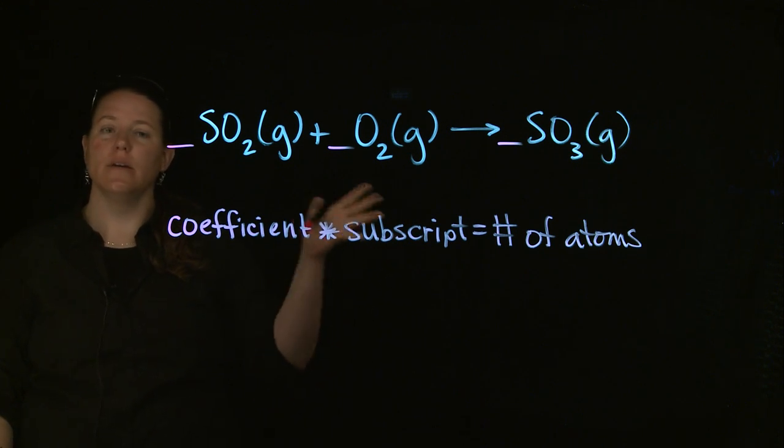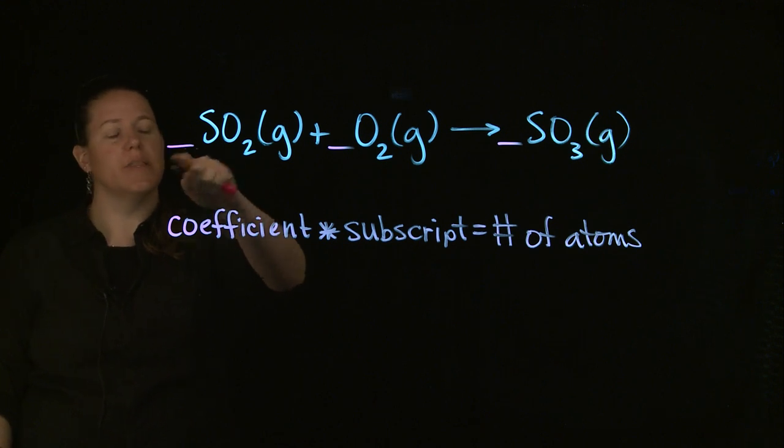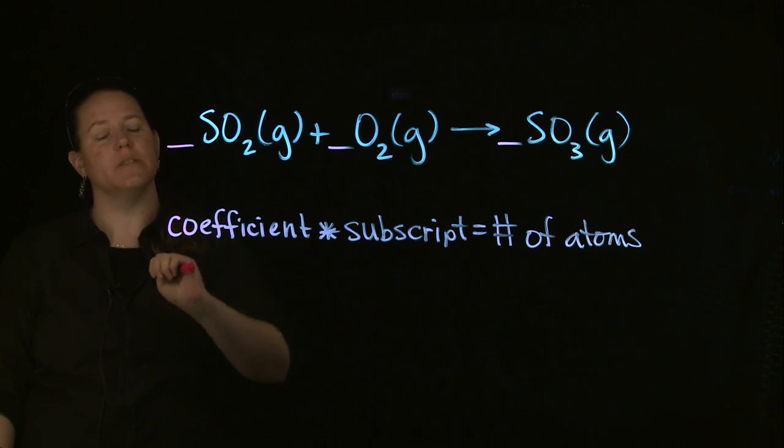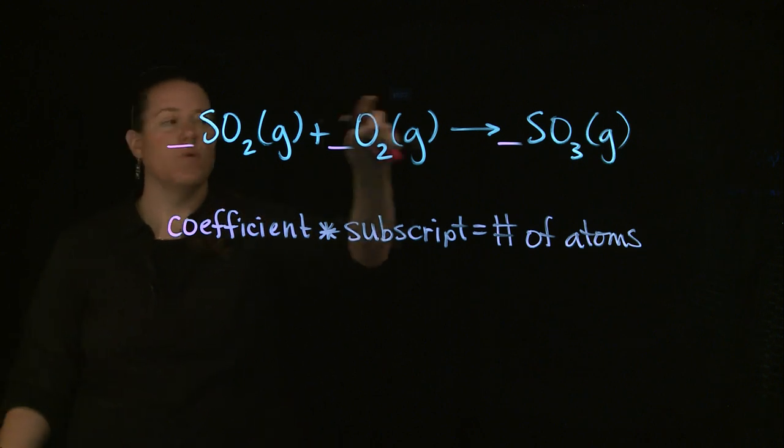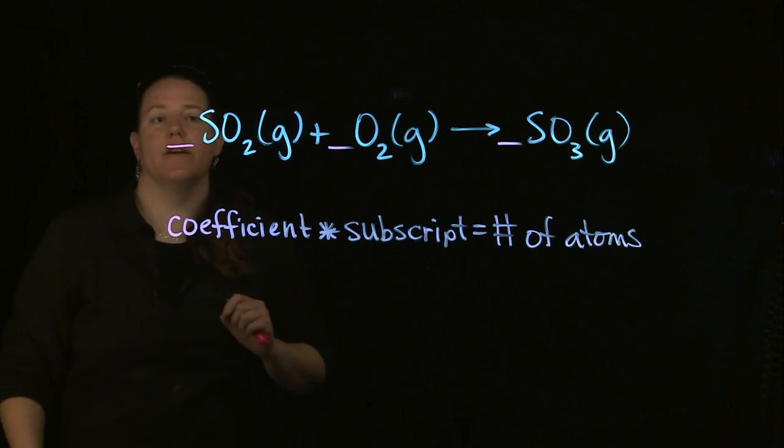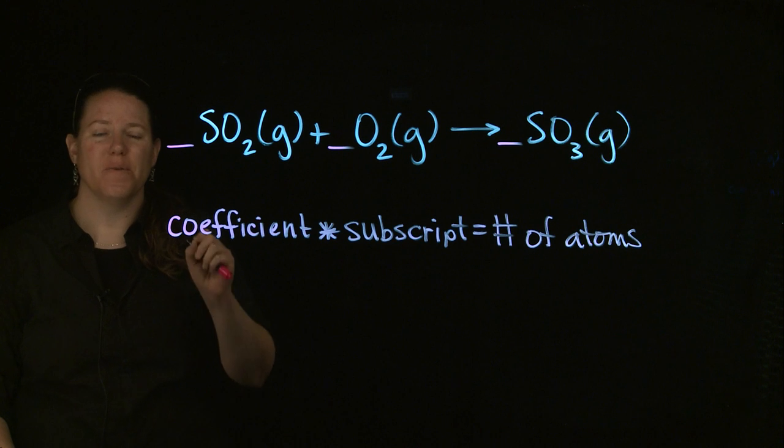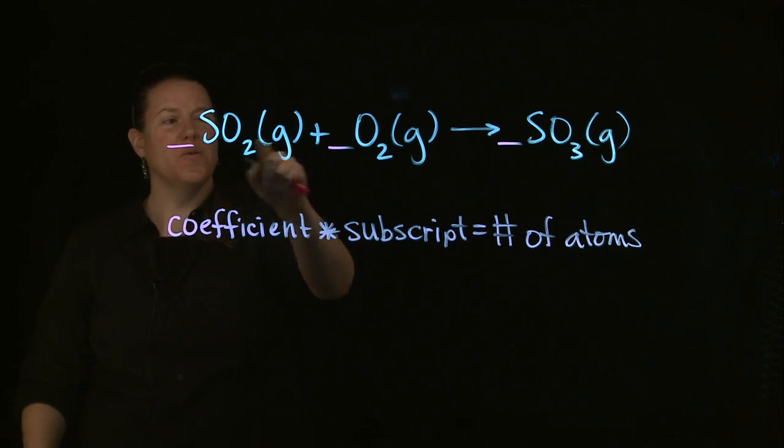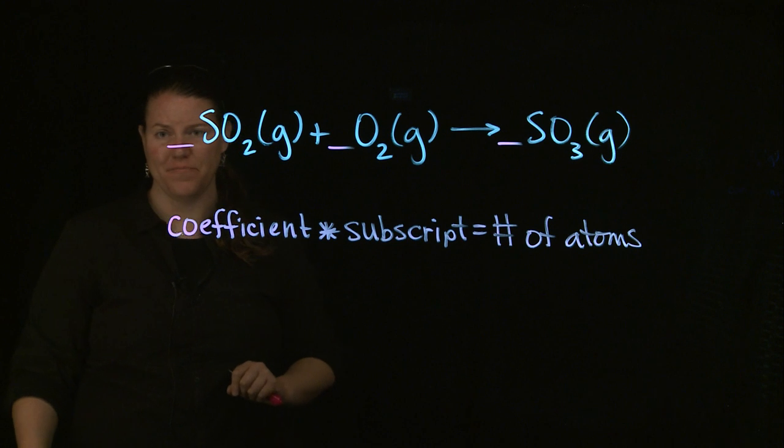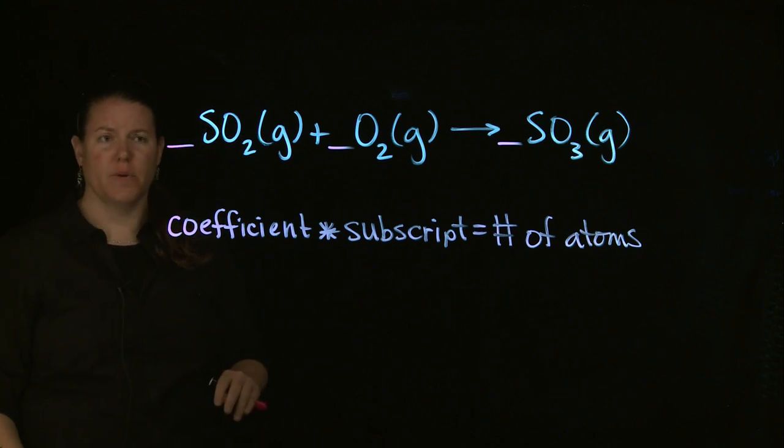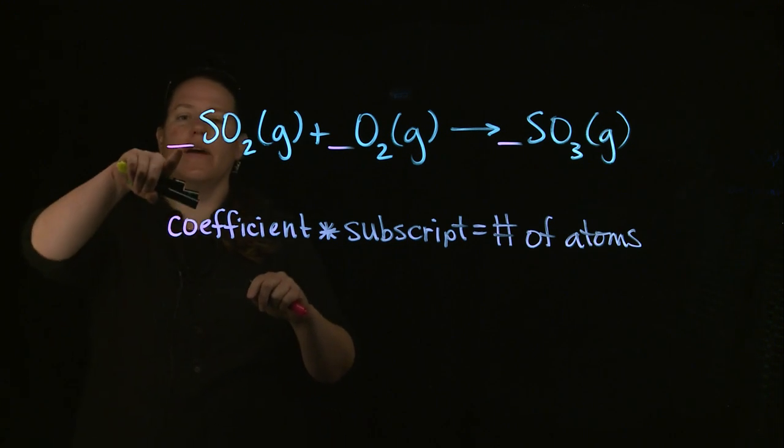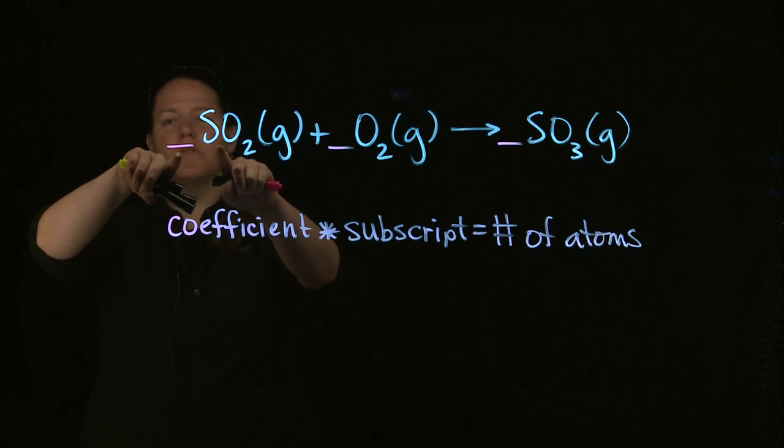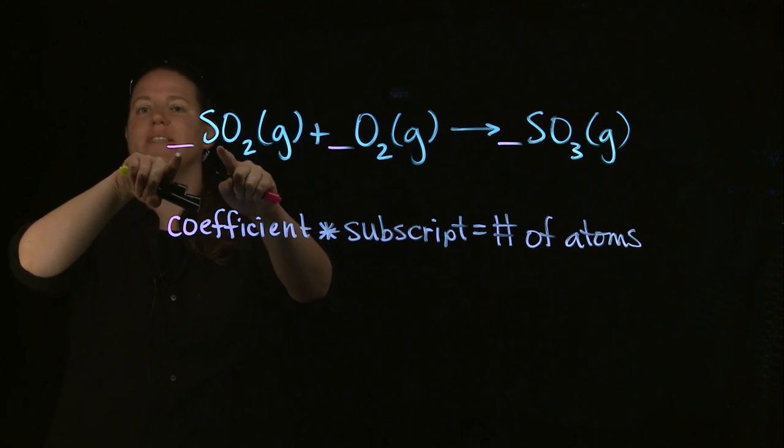We move from left to right here. One of the things you would see is that we can start with S. The reason why we can start with S when we're balancing is because S exists in only one place on either side of the arrow. You would never start with O if you could because O is in two places on one side.